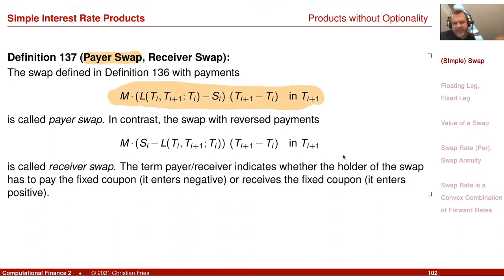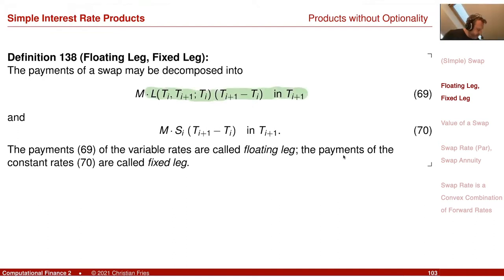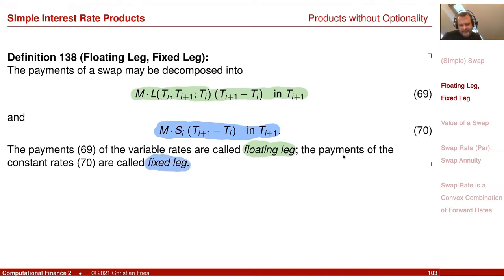The payer swap has M inside, and M could just be a minus amount. Another term is that sometimes we decompose the payment streams into separate payment streams, and these are called legs. The payment stream can be decomposed into two different legs: the floating leg, which pays the variable floating amount, and the fixed leg, which pays the fixed amount in every time period.